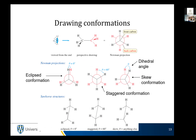The best possible conformation is the staggered conformation where all hydrogens are 60 degrees from all other hydrogens — everything is as far away from everything else as possible. That's great. If you cooled the alkane down to absolute zero, they would all be in this conformation. But if there's any temperature at all, it takes very, very little energy to spin sigma bonds around.